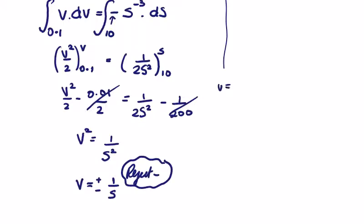Then we can say that v is equal to 1 over s, or v is equal to s to the power of minus 1.